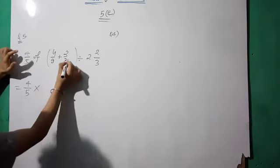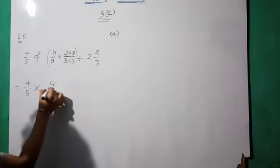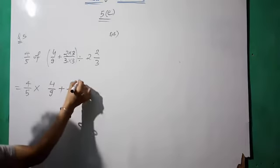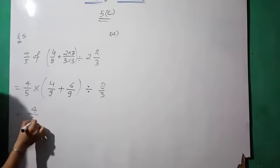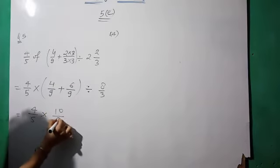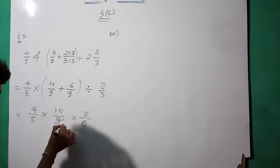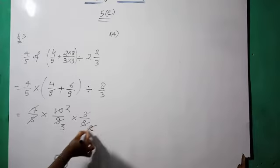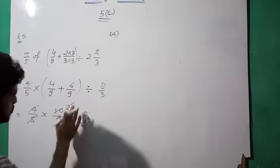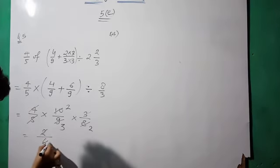Multiply numerator and denominator by three: four by nine plus six upon nine, giving ten upon nine. Change the division to multiply and take the reciprocal of eight by three, which is three by eight. Four cancels with eight and we get two upon six. So the answer is one by three.